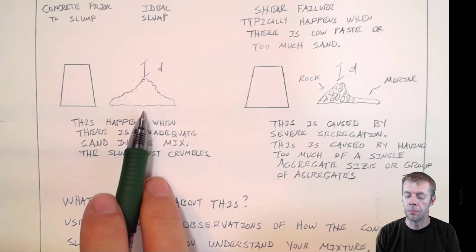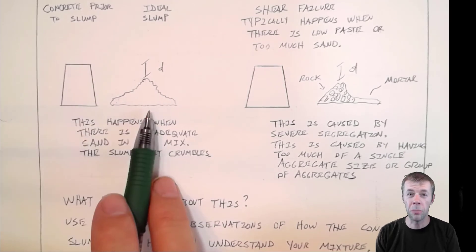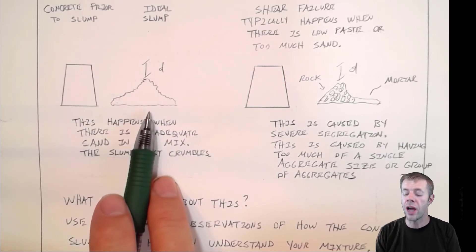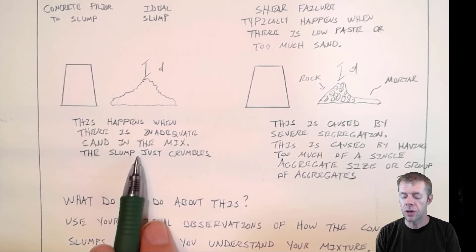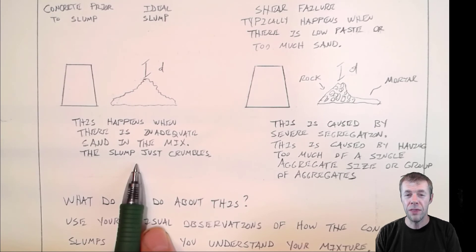Now let's say this happens to you. When you pull the slump cone, it just crumbles, just falls down. It looks like a big mountain. Now this typically happens when there's either inadequate sand in the mix and the slump just falls apart. There's just inadequate sand really to give it cohesion to help the slump, the concrete kind of hold together.